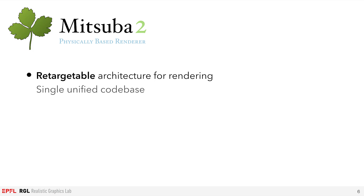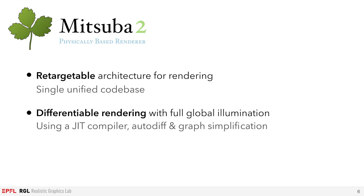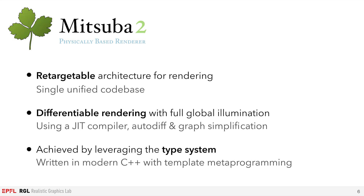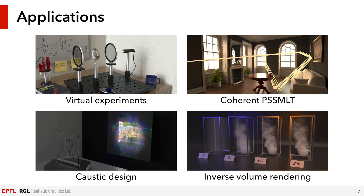In this talk, we introduce the retargetable architecture, which allows us to support a wide range of complex features in a single unified codebase. In particular, Mitsuba 2 supports differentiable rendering with full global illumination. It's written in modern C++, and we leverage the type system to do most of the heavy lifting. The first part of this talk will cover Mitsuba 2's architecture and implementation. In the second part, Delio will present some cool applications enabled by this system.